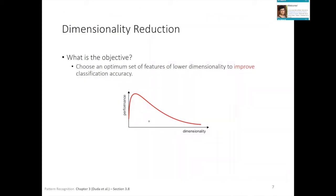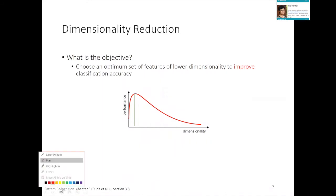Our focus in this session is dimensionality reduction: we aim to choose an optimal set of features of lower dimensionality to improve prediction accuracy. This figure shows there is some kind of sweet spot — in the beginning there are not enough features, but once you have enough good features, adding more is not necessary. This is also related to Occam's Razor: when you can use a simpler model to perform a prediction, you should pick the simpler version, for interpretability and because simpler models are easier to explain and check.